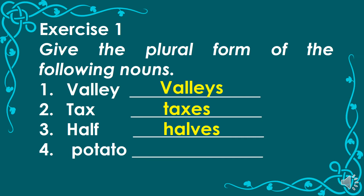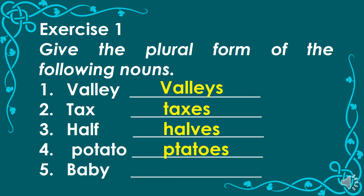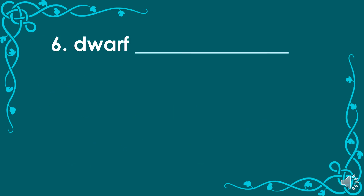Number 4: Potato. The correct plural form is potatoes. Number 5: Baby. How do you form the plural of the noun baby? The correct answer is babies. We change Y to letter I and then add ES. Number 6: Dwarf. The correct answer is dwarfs. Sometimes you may encounter dwarves, but that was used during ancient times. In current usage, we use dwarfs.